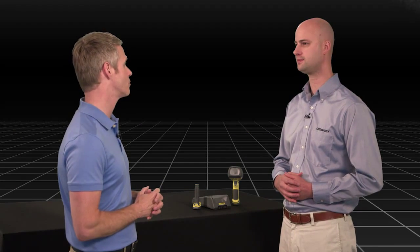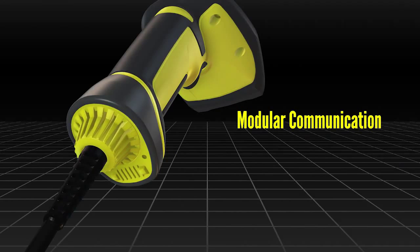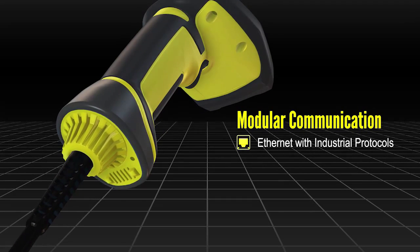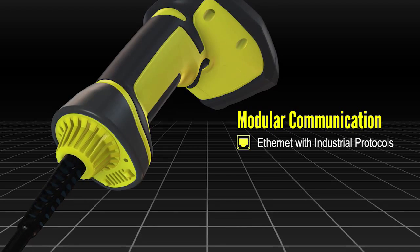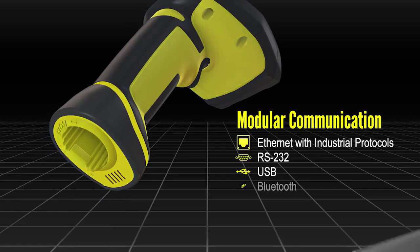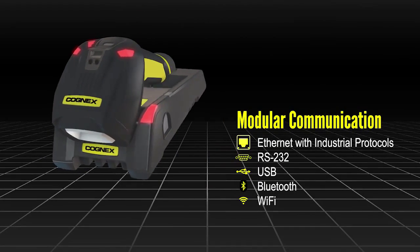So tell me about the 8600 communication options. Well, it has Ethernet communication and industrial protocols, allowing it to communicate directly with PLC's. As well, you can have RS-232 or USB communication, or Bluetooth or Wi-Fi for wireless options.